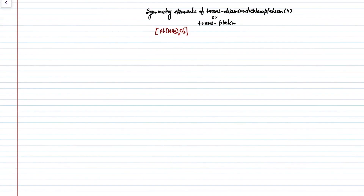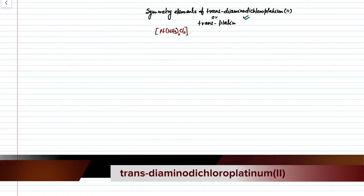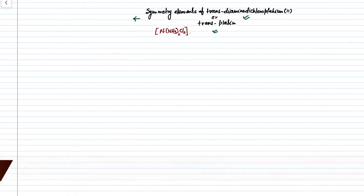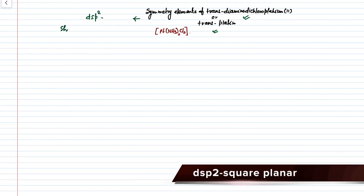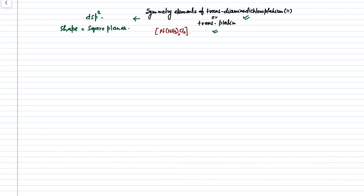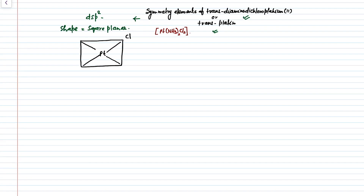Hi everyone, welcome to my channel Big Bang Chemistry. Today I'm going to explain the symmetry elements present in trans-diamminedichloroplatinum, or transplatin. The hybridization of this molecule is dsp2 and the shape of this molecule is square planar. Before starting our investigation about the presence of symmetry elements in this molecule, we must draw the structure for transplatin, and this is the reference structure.